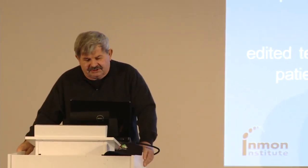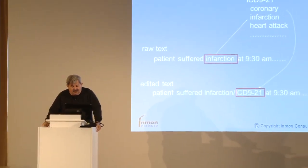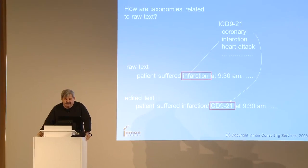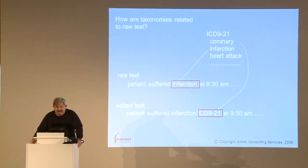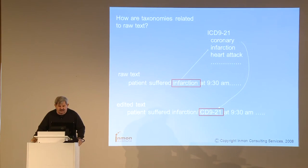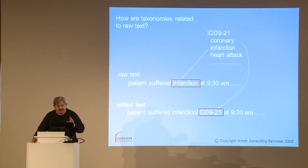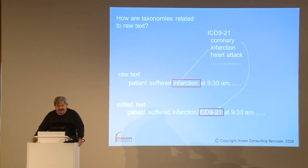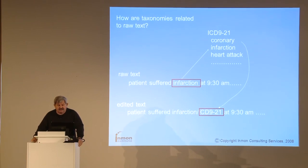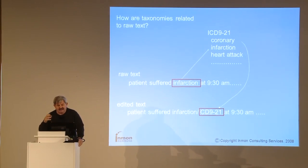How does that relate to unstructured data? Here I have something called ICD-9-21, a classification of medical information — that would be my taxonomy. I have some raw text, and when I find in the raw text one of my terms, I give it a higher level classification. This is how I relate my taxonomy to my raw text. This is one of the ways — not the only way — that unstructured data can indeed have context applied to it.